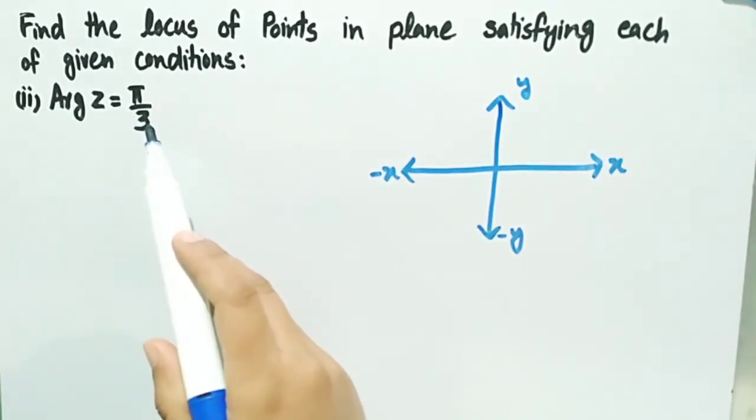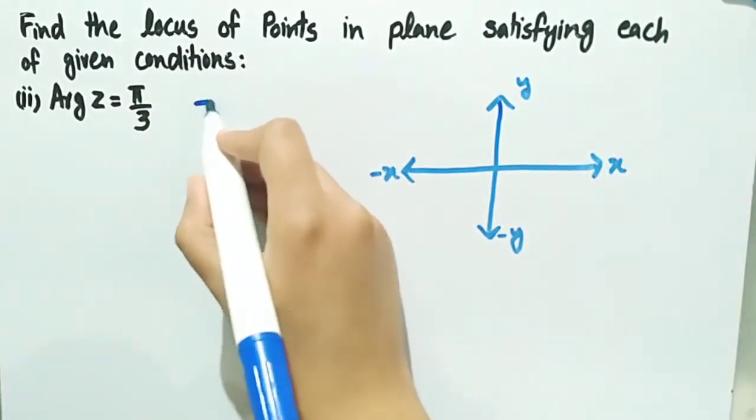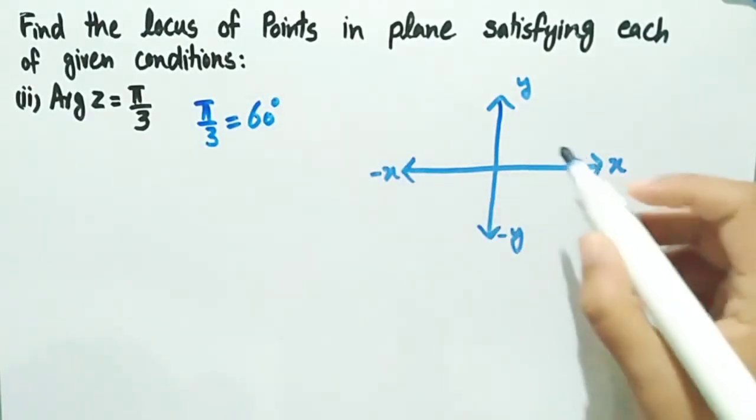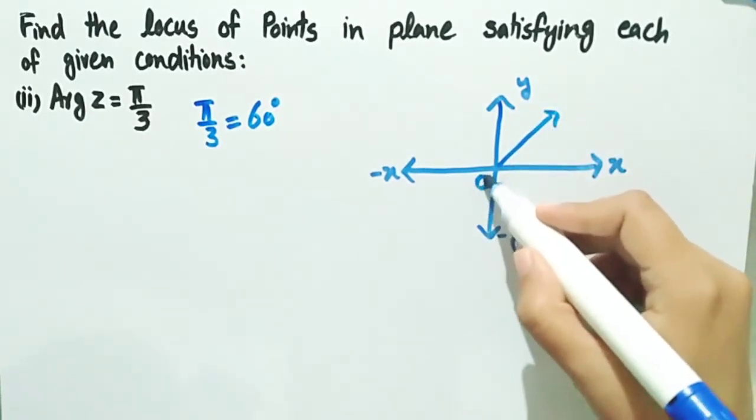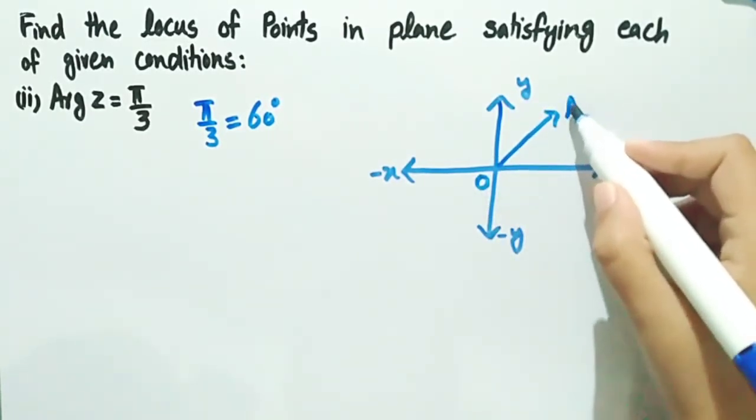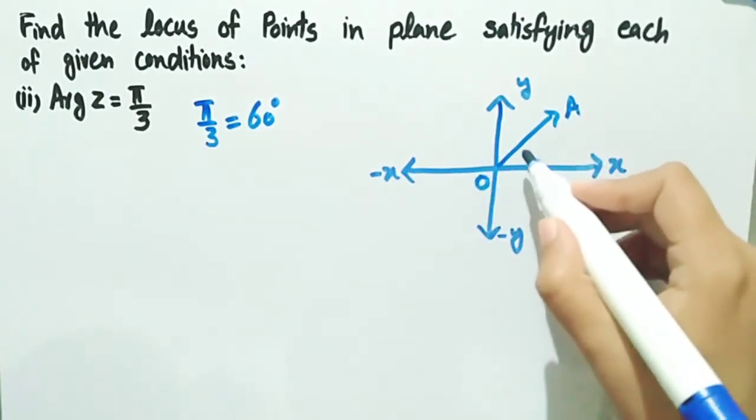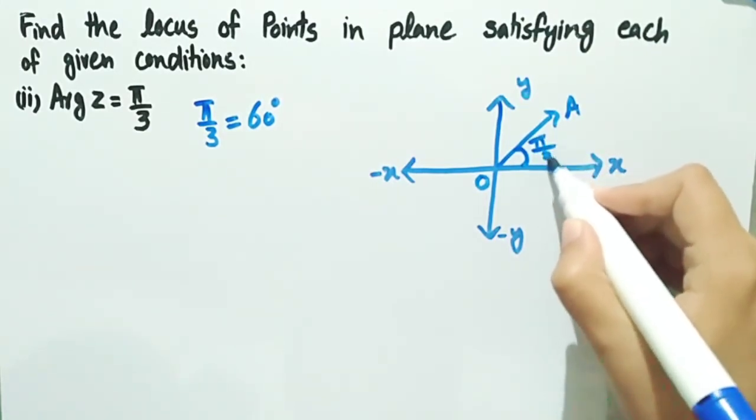We know that pi by three equals 60 degrees. So here we can make a line, let this point be O and let this point be A, and we consider that this is the argument and it makes an angle pi by three with the positive x-axis.